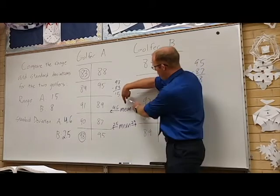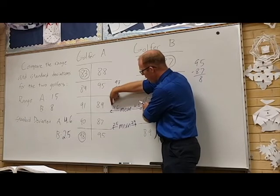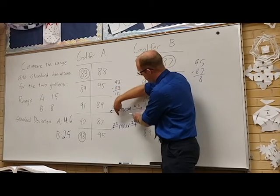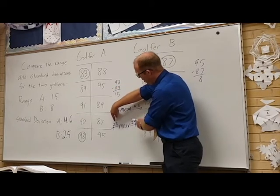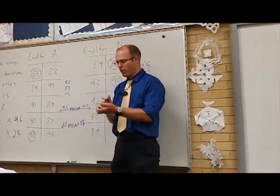And as we can see from this picture, golfer A has spread out their scores or deviated by a lot more than golfer B. So we can say that golfer B is a lot more consistent than golfer A.